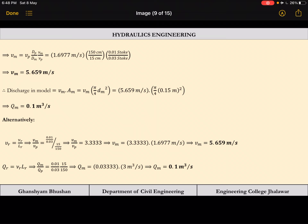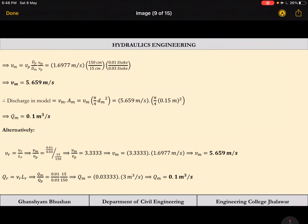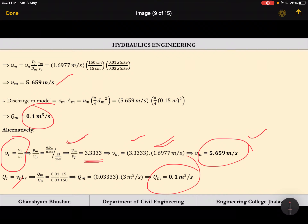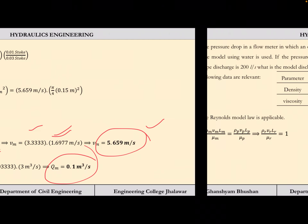Solving gives Vm = 5.659 m/s, and model discharge Qm = Vm × (π/4 × 0.15²) = 0.1 m³/s. Alternatively, using the ratio formula: Vr = nu_r / Lr = (0.01/0.03) / (1/10) = 3.33, so Vm = Vr × Vp gives the same result. Similarly, Qr = nu_r × Lr = 0.033, and Qm = Qr × Qp = 0.1 m³/s.